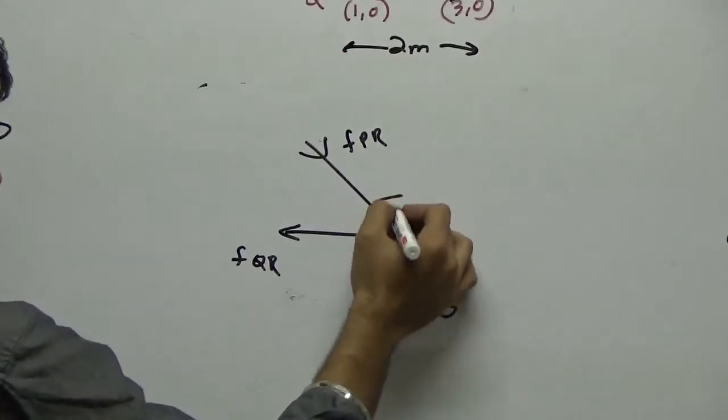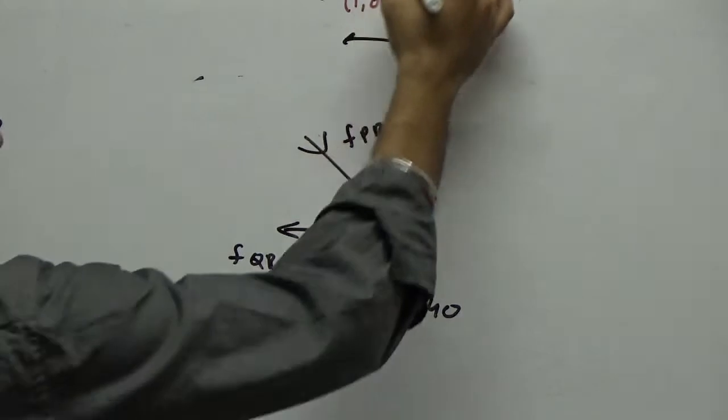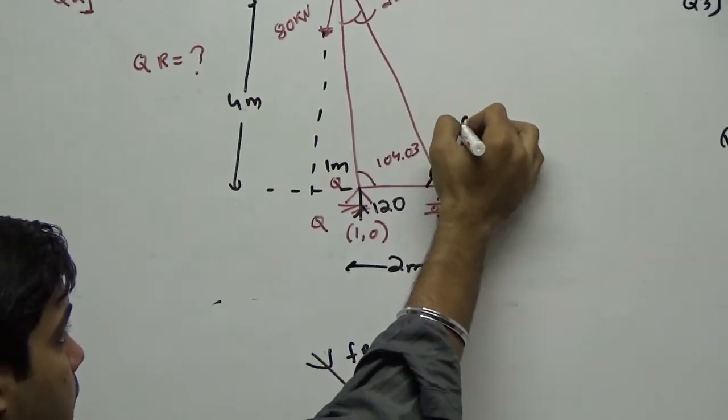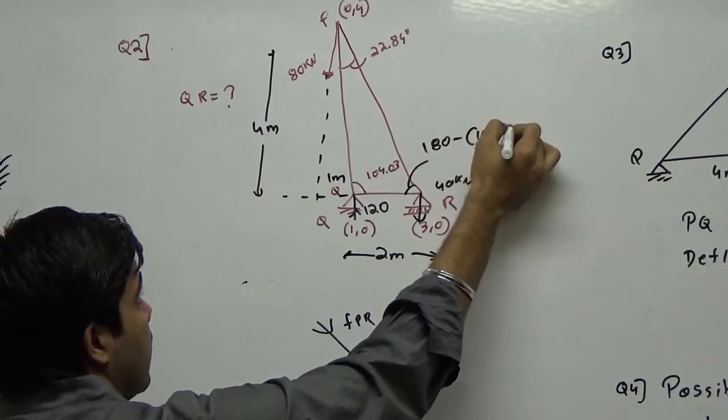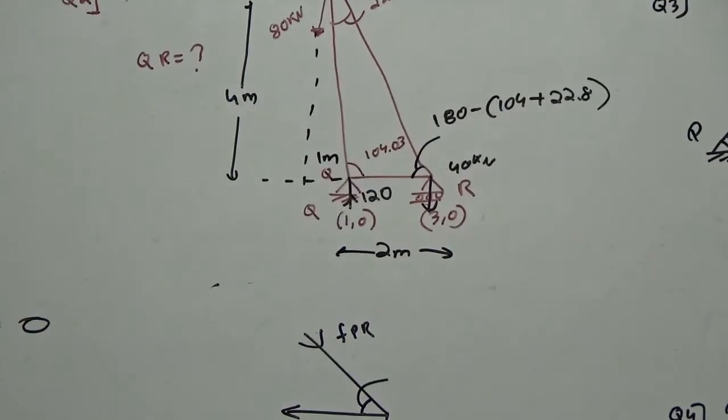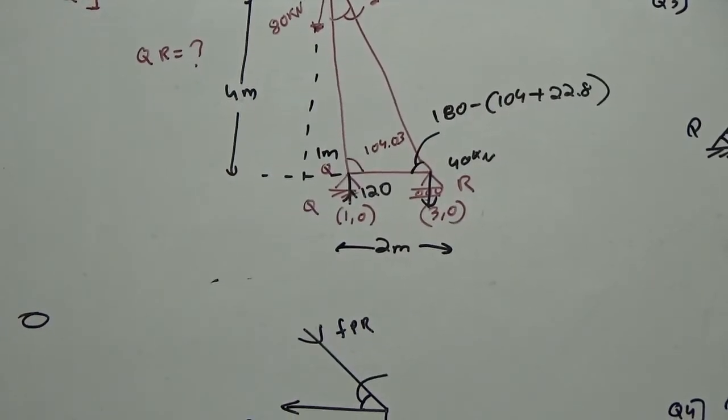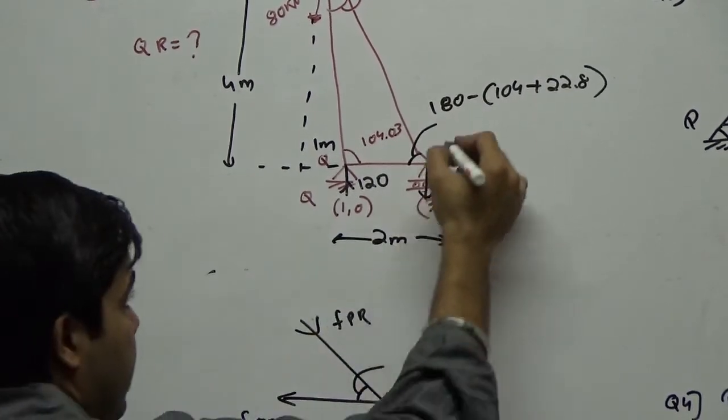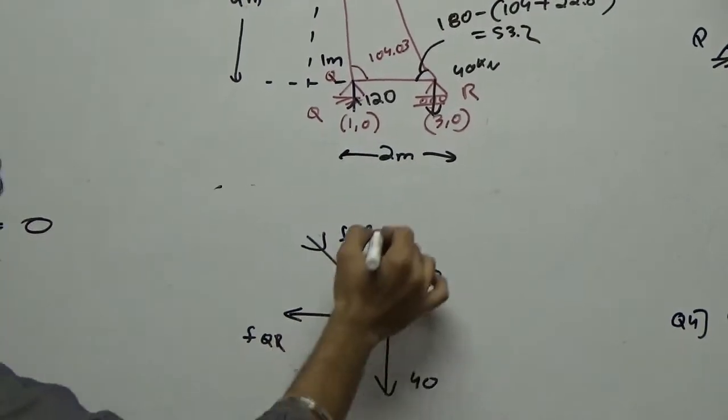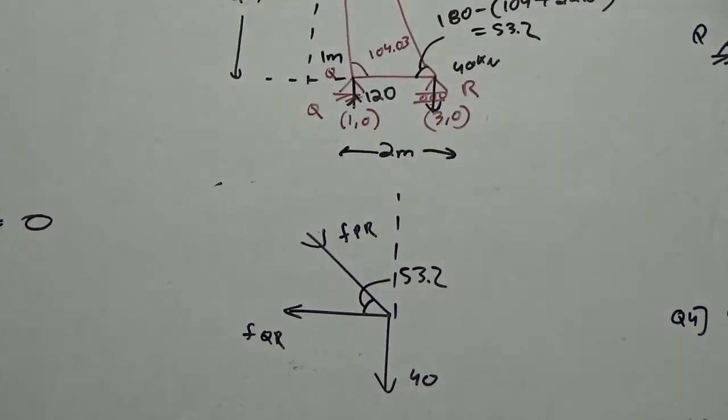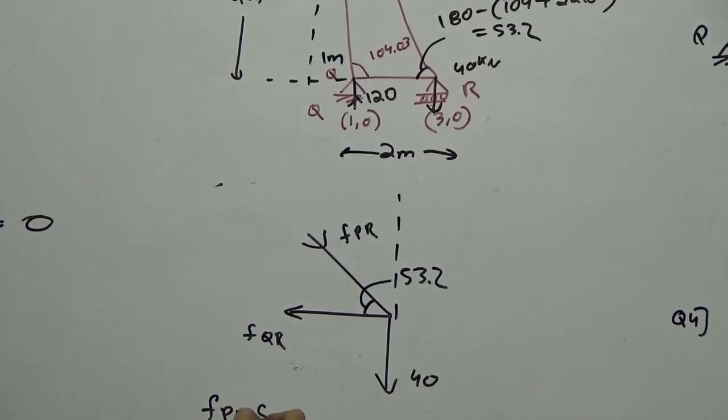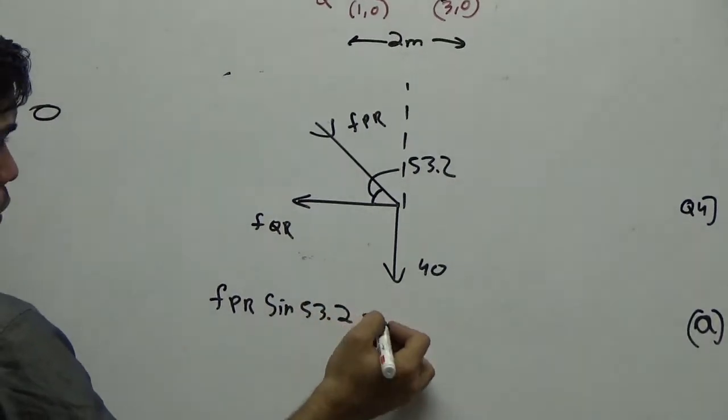So, you need this angle. How do you find this angle? The sum of the angle should be 180 degrees. So, I can say this angle is 180 minus 104 plus 22.8. So, what is the angle there? This gives you 53.2. So, this is 53.2. So, first you need FPR. You cannot find FQR unless you know FPR. So, I can write FPR sin 53.2 equal to.